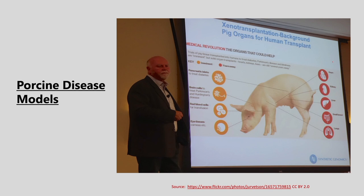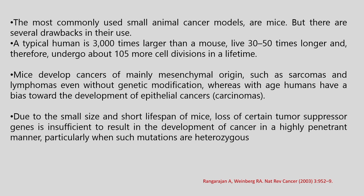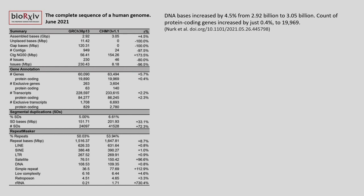The most commonly used small animal cancer models are mice, but these have several drawbacks. A typical human is 3,000 times larger than a mouse and lives 30 to 50 times longer, undergoing about 10^5 more cell divisions in a lifetime. Mice develop cancers mainly of mesenchymal origin such as sarcomas and lymphomas even without genetic modification, whereas humans with age have a bias towards epithelial cancers. Due to the small size and short lifespan of mice, loss of certain tumor suppressor genes is insufficient to result in cancer development in a highly penetrant manner, particularly when mutations are heterogeneous. Therefore, when using mice models, we must be careful in data handling, processing and interpretation with respect to human disease.